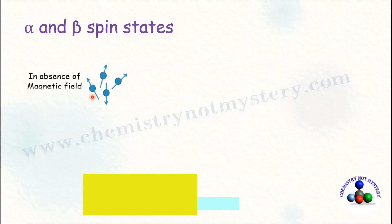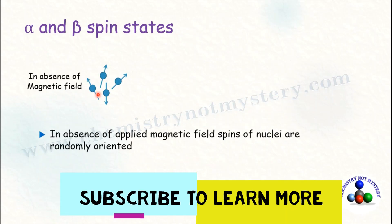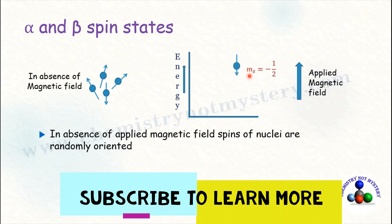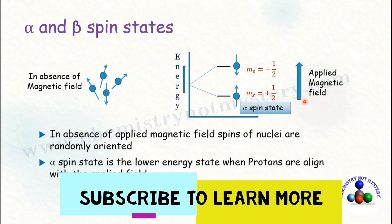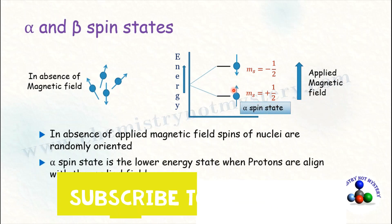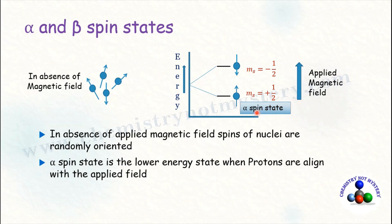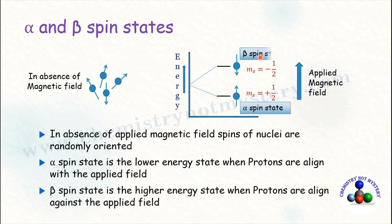In the absence of an applied magnetic field, nuclei are randomly oriented. But when a magnetic field is applied, they either get aligned with the applied magnetic field or against it. When aligned with the magnetic field, they have a lower energy state called the alpha spin state. When aligned against the magnetic field, they have a higher energy state called the beta spin state.